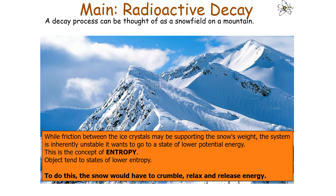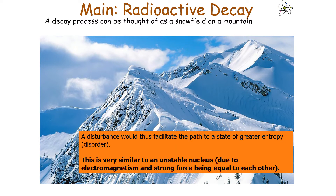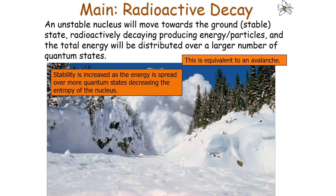A decay process can be thought of as a snow field on a mountain. Whilst the friction between ice crystals may support the snow's weight, the system is inherently unstable and wants to go to a state of lower potential energy — the concept of entropy. Objects tend towards states of lower entropy. Similarly, an unstable nucleus will move towards the ground state and radioactively decay, releasing particles or energy, with the total energy distributed over a larger number of quantum states, increasing stability.